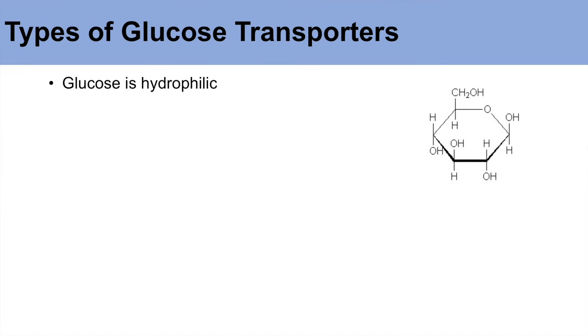Hey guys, in this lesson I'm going to be talking about glucose transporters: what they are, the different types, where they are found in the body, and their relevance to whole body metabolism. The reason we need glucose transporters is because glucose is hydrophilic — it has many hydroxyl groups, which means it's not easily transported across cellular membranes.